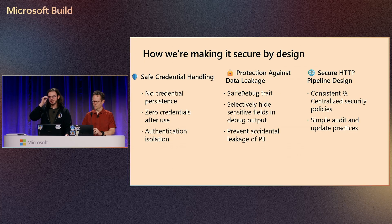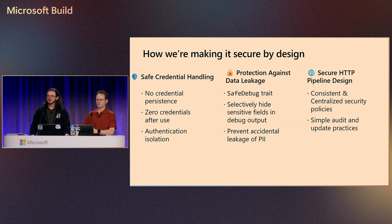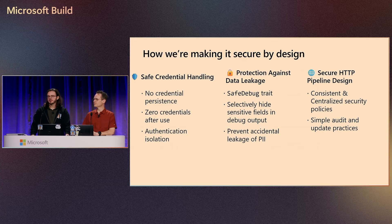A bit about how we're making the Azure SDK for Rust secure by design. The first thing is how we're handling credentials — the Azure SDK for Rust does not persist, cache, or reuse any security credentials. All authentication data is zeroed after use. We also help protect against accidental data leakage with a custom safe debug trait, which helps prevent PII from getting into debug output and log output. Our secure HTTP pipeline design implements security policies consistently across all communications with any Azure service.